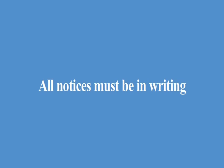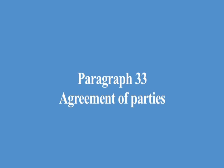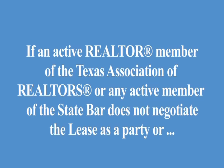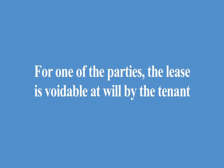Paragraph 32, Notices. This paragraph notifies the tenant that all notices must be in writing. Proper notice is effective when hand-delivered, sent by mail, or sent by electronic transmission to the address, email address, or fax number specified in this paragraph. Be sure to follow up with the other party to make sure notices have been received. Paragraph 33, Agreement of the Parties. This paragraph informs the tenant that this lease contains the entire agreement between the landlord and the tenant. Oral agreements do not become part of the lease — any changes must be in writing and signed by all parties. Remember, the lease is binding once it is signed by all the parties. Most importantly, if an active Realtor member of the Texas Association of Realtors or an active member of the State Bar of Texas does not negotiate the lease as a party for one of the parties, the lease is voidable at will by the tenant.